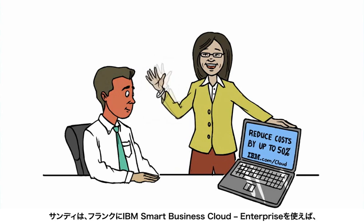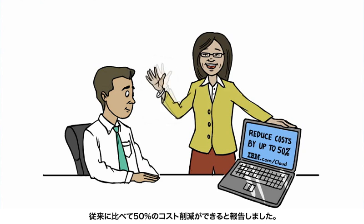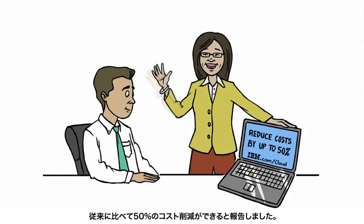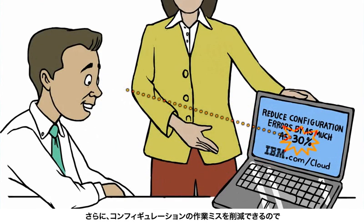Savvy Sandy excitedly tells Frantic Frank that with IBM Smart Business Development and Test on the IBM Cloud, they can minimize upfront capital costs and reduce operational costs by up to 50%. They can improve quality of testing by reducing the number of errors caused by incorrect configurations by as much as 30%.